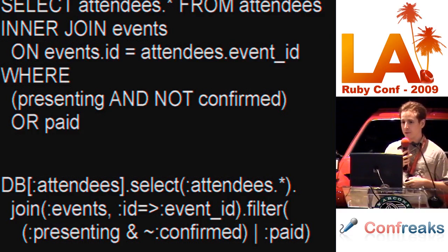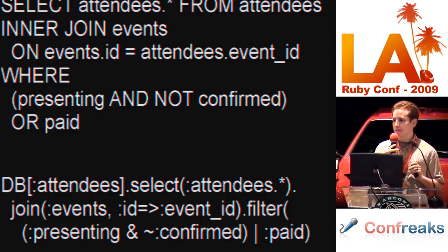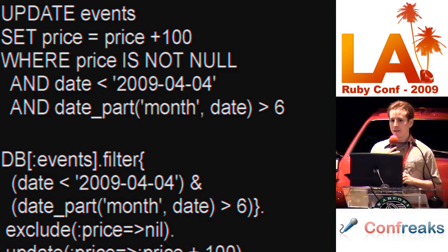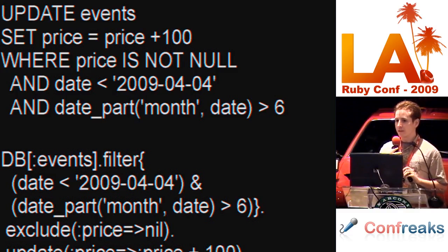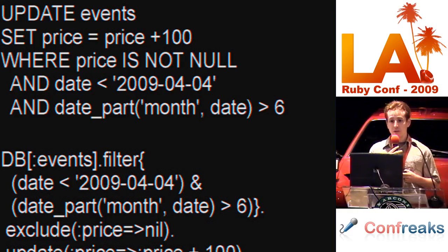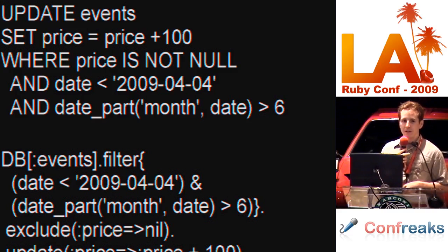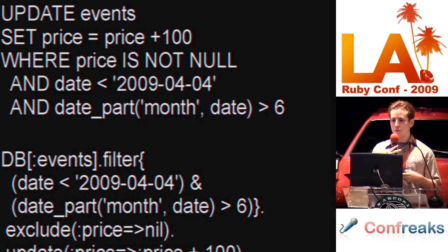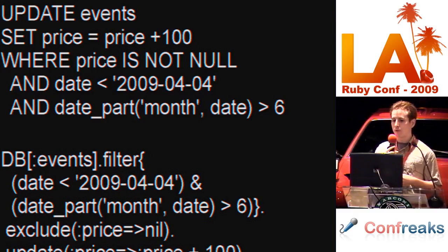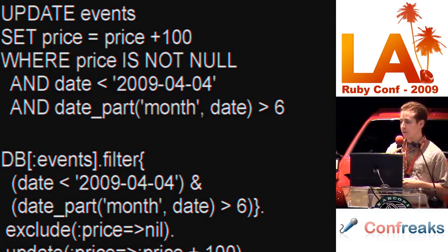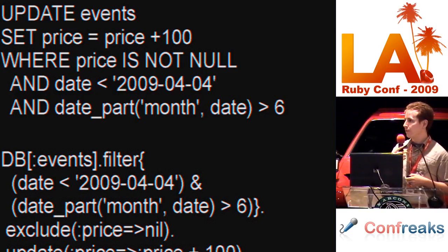Here's a slightly more complicated example with a join. It shows that you can select all columns of a table using the symbol multiplication operator without an argument, very similar to how you do so in SQL. It also shows how easy it is to join tables by specifying a table name and conditions. Sequel assumes the ID column is for the events table, and the event_id column is for the attendees table. The bitwise operators on the symbol operate as logical operators in SQL — ampersand is AND, pipe is OR, and tilde is NOT. Finally, you can reference existing columns when setting new values — for example, the new value of price can depend on the existing price. This allows you to update prices for all filtered records at once, rather than retrieving all records, determining the new price, and updating them individually.